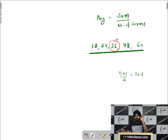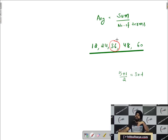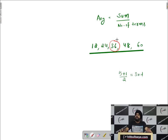Another basic but very relevant concept: if a constant term is added to all the terms, the average increases by the same constant. Similarly, if you multiply all the terms by a constant, the average also gets multiplied, and the same applies with division. Now let's move on to the questions.